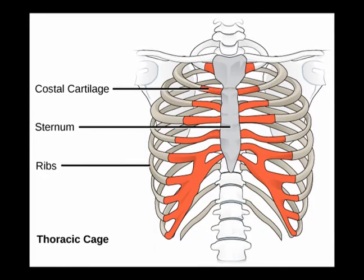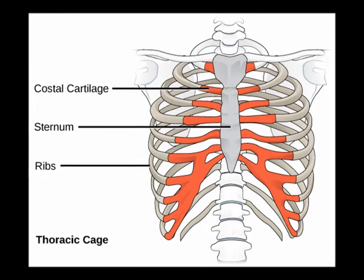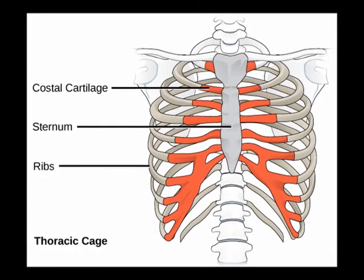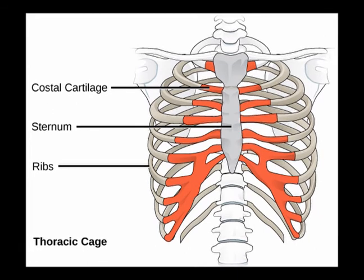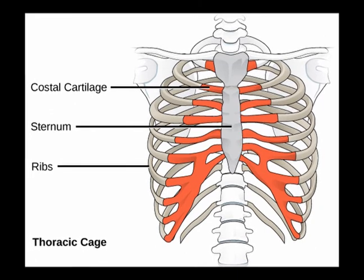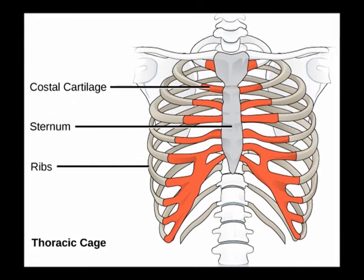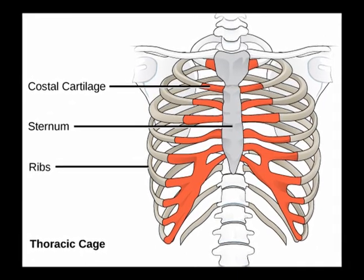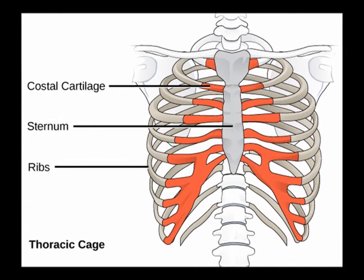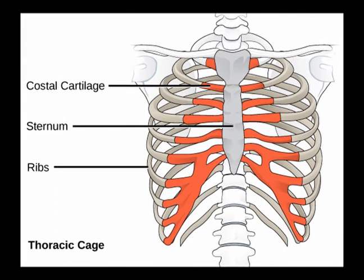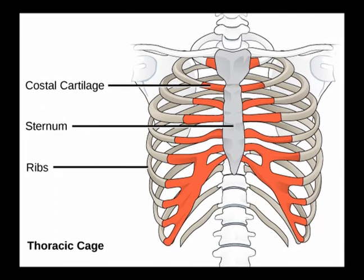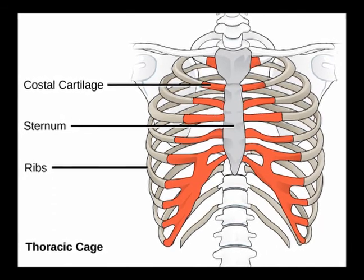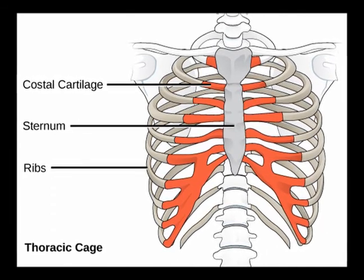So we have the true ribs, known as the vertebral sternal ribs, and the false ribs. Numbers eight through 10 are known as the vertebral conjual ribs, and numbers 11 and 12 are the floating ribs.